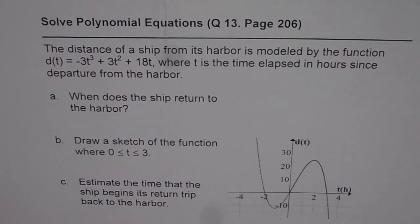Here is the question. It is question number 13, page 206 from Advanced Functions book written by Nelson. Those doing Advanced Functions grade 12, MHF4U, are using this book regularly. The distance of a ship from its harbor is modeled by the function d(t) equals 2 minus 3t cubed plus 3t squared plus 18t, where t is the time elapsed in hours since departure from the harbor.